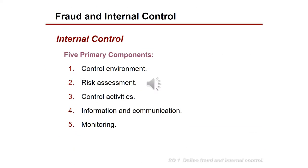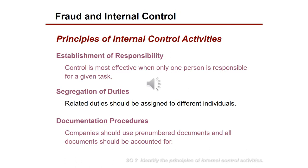Internal controls typically have five primary components: control environments, risk assessments, control activities, information and communication, and monitoring. The principles of internal control activities include, first, establishment of responsibility — this control is most effective when only one person is responsible for a specific task. The second is segregation of duties, where related duties should be assigned to different individuals.